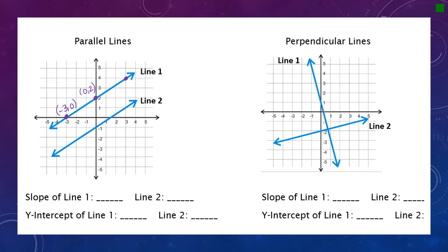For the slope, I have two choices: I can either count rise over run, which is my preference, or I can use the slope formula if I have the coordinates. I'm going to start at my lower point and count how far up I go, then how far to the right. We went up two boxes and to the right three boxes. So the slope of line one is two over three.